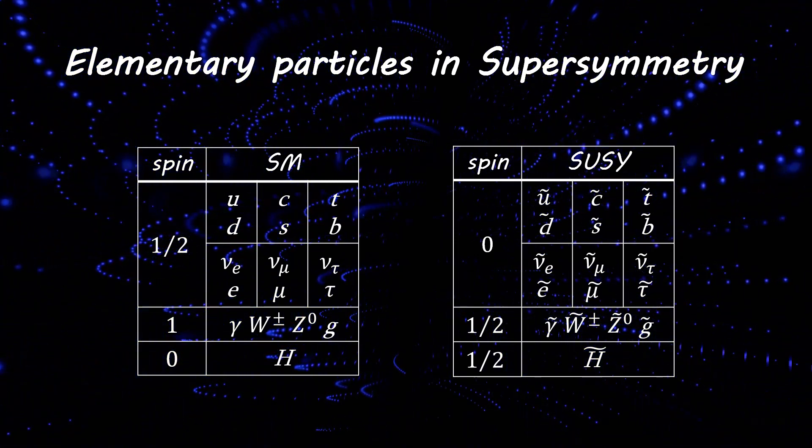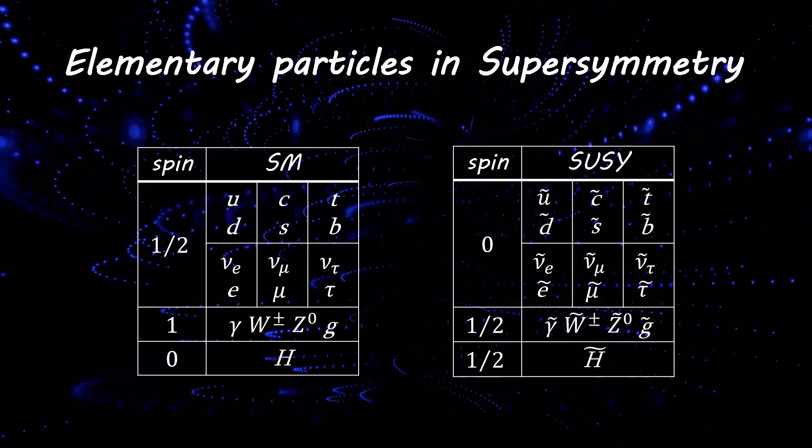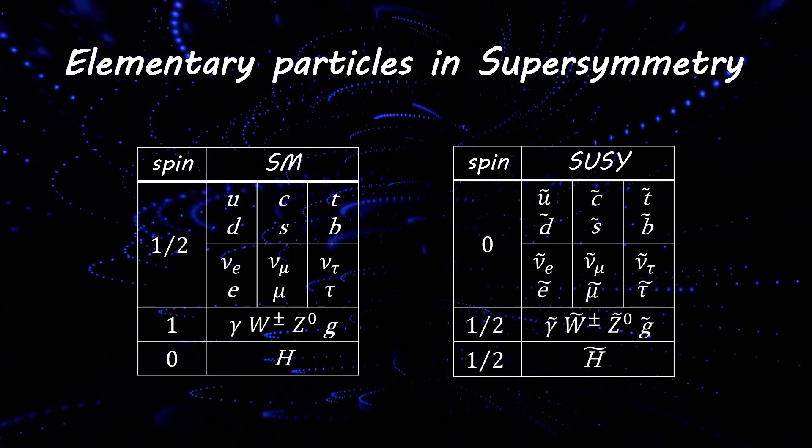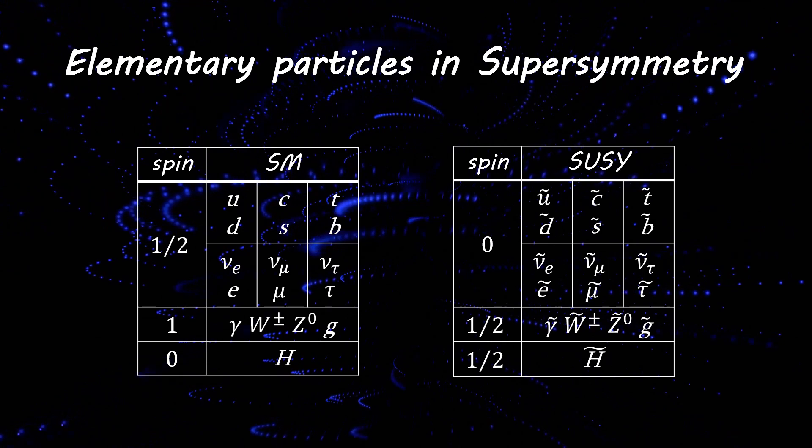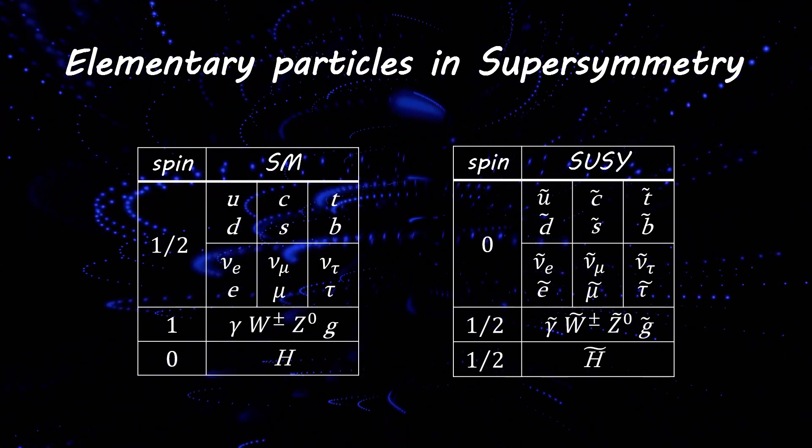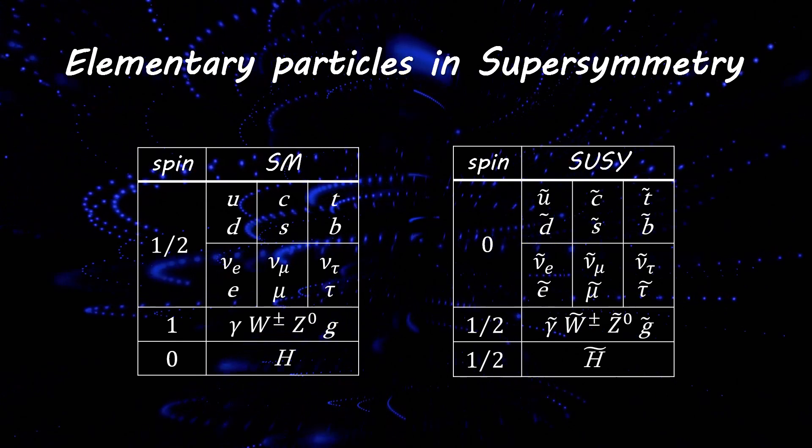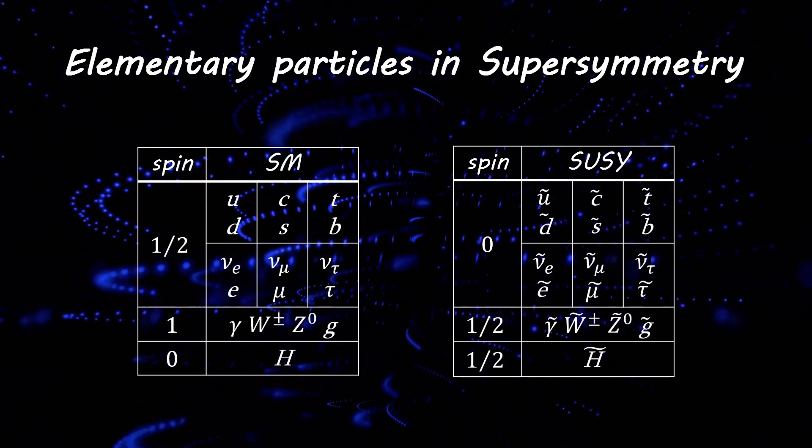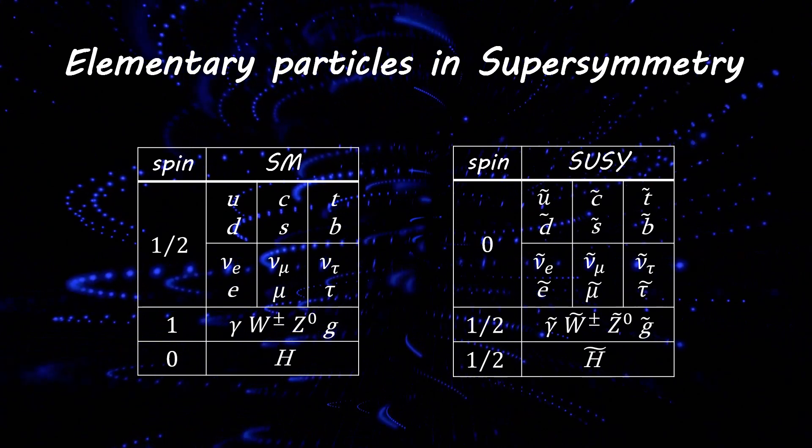Fermions all have half of the unit of spin, while the bosons have zero, one, or two units of spin. Supersymmetry predicts that each of the particles in the Standard Model has a partner with a spin that differs by half of a unit. So bosons are accompanied by fermions and vice versa.